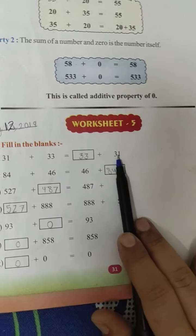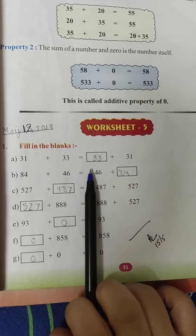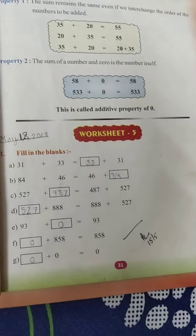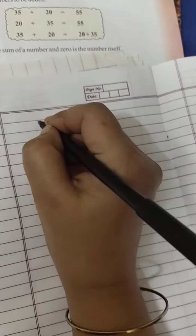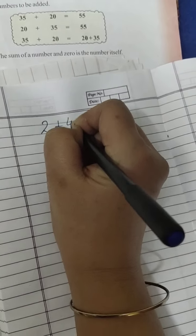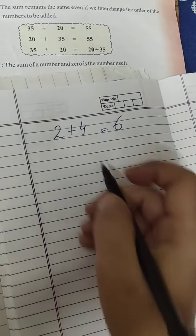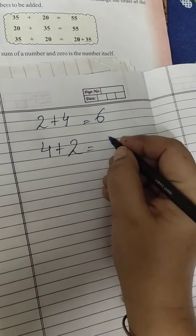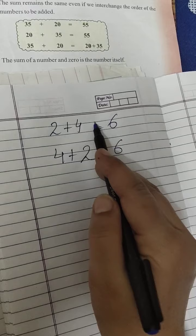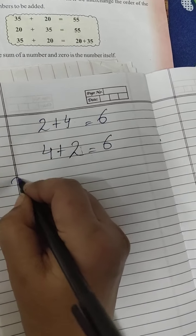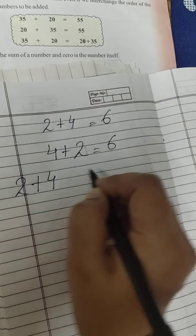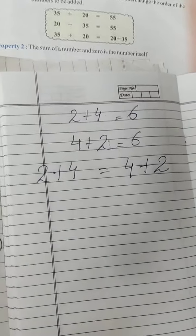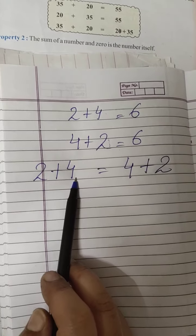Worksheet number 5: fill in the blanks. In the middle is the equal to sign. Now example: 2 plus 4. If I add 4 to 2, the answer is 6. If I add 2 to 4, the answer is also 6. 2 plus 4 is equal to 4 plus 2. It means the first and second terms can be interchanged and the answer after adding will still be the same.